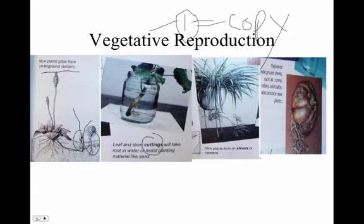This is called a cutting — you can take a branch or stem from a plant, stick it in water, and certain plants will create roots and grow a whole new copy of the plant. These are called shoots. This is a spider plant — spider plants create little baby plants off their stems, and these are called shoots.